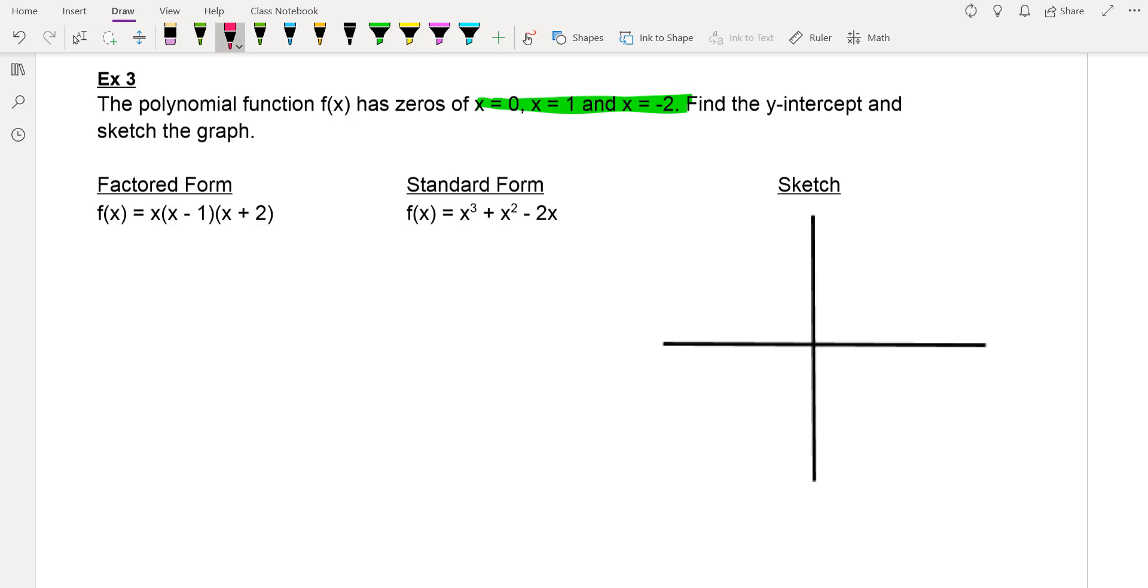So again, when we go to find the y-intercept, you're gonna plug in what number again? Zero. You're gonna plug in zero anywhere that there is an x. And again, some people might be able to skip this step right here, depending on your level of algebraic maturity. So you might be able to just go right to that step.